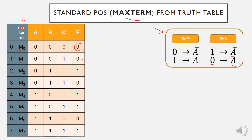For the first product of sum term, the inputs are 0, 0, and 0, so we have A OR B OR C. For the second product of sum term, we have A equal to 0, B equal to 0, and C equal to 1. Based on this, we get a positive A, positive B, and a complement of C.